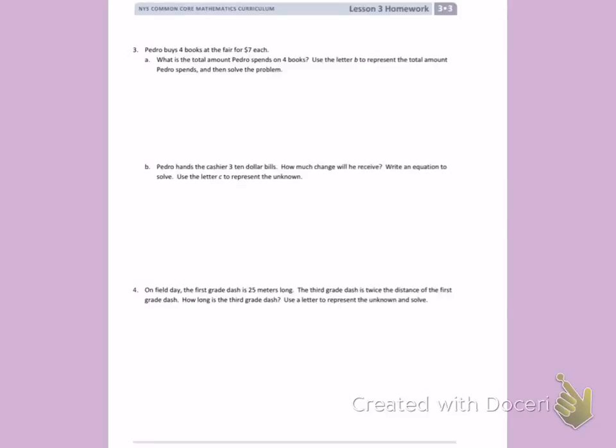This is Module 3, Lesson 3 Homework on the back, Number 3. Pedro buys 4 books at the fair for $7 each. What is the total amount Pedro spends on 4 books? Use the letter B to represent the total amount Pedro spends and then solve the problem.